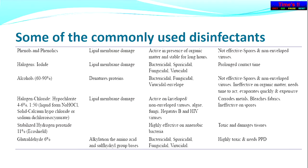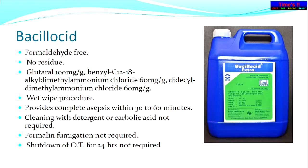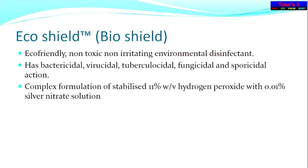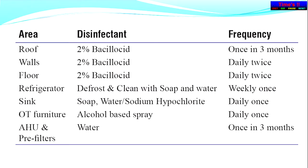Commonly used disinfectants work by damaging the lipid membrane, denaturing proteins, or by alkylation. We use bacillocid in our OT, which is formaldehyde free and provides complete asepsis within 30 to 60 minutes; cleaning with detergent and carbolic acid is not required after this, and formalin fogging is also not required. The OT does not need to be shut for 24 hours — it can be used after one hour of fogging. Our schedule is: 2% bacillocid for roofs once in three months; walls with 2% bacillocid daily twice up to where hands can reach; floors daily twice; and sinks and OT furniture cleaned every day. The air handling unit and air exchange handling unit should be cleaned once every three months.